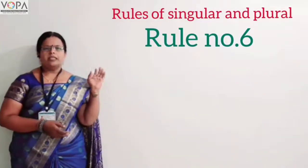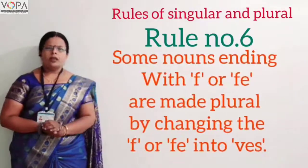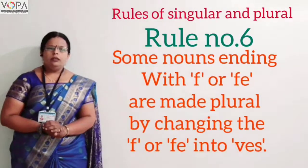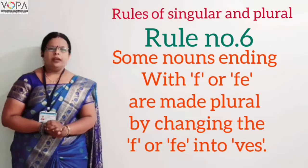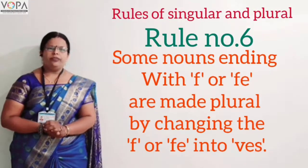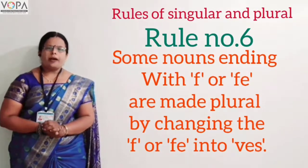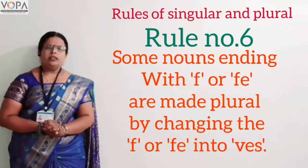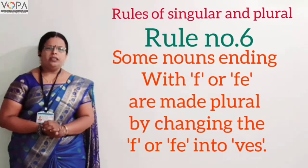Rule number six. Some nouns ending with 'f' or 'fe' are made plural by changing 'f' or 'fe' into 'ves'.